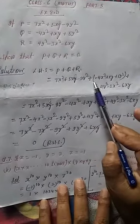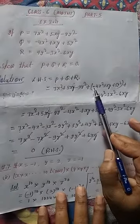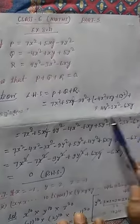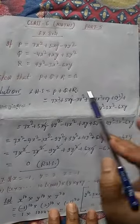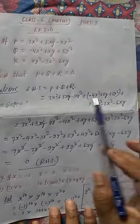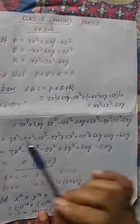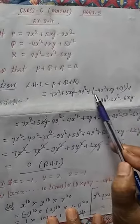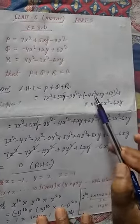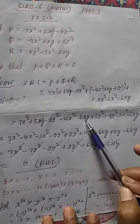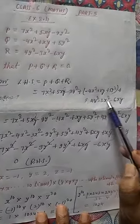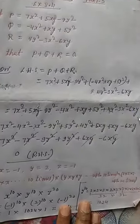We put a plus sign and take Q in brackets because there is a minus sign. Now plus sign for R. And what is the value of R, students? The value of R is: 4y squared minus 3x squared minus 6xy.